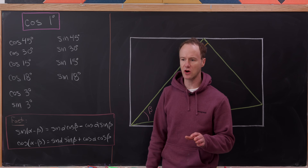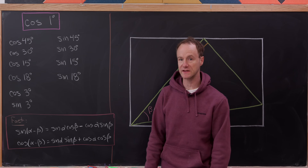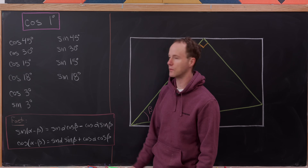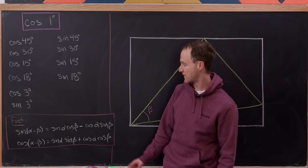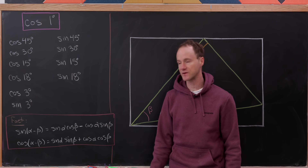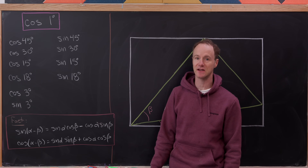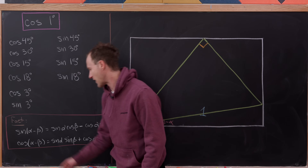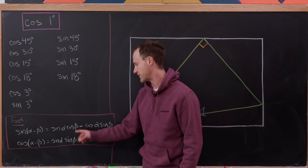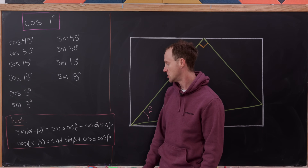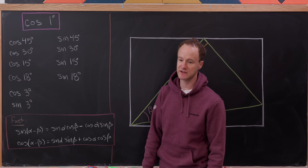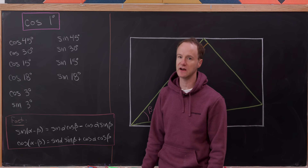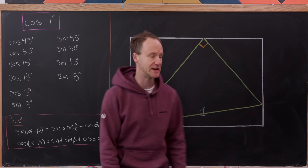Before we get started, I'd like to do a geometric proof of the difference formula for sine and cosine. So here we've got sine of alpha minus beta equals sine of alpha cosine beta minus cosine of alpha sine of beta, and then a similar formula for the cosine of alpha minus beta.